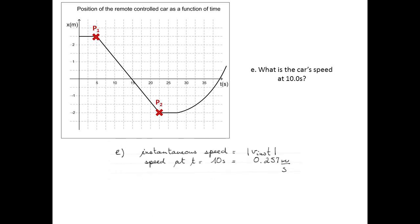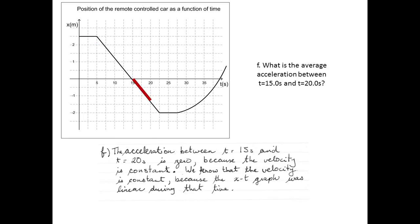The instantaneous speed is just the absolute value of the instantaneous velocity. So at 10 seconds, that is 0.257 meters per second. The acceleration between 15 and 20 seconds is 0, because the velocity is constant. The slope of the position-time graph does not change between 15 and 20 seconds — the slope is the velocity, and if the velocity doesn't change, there is no acceleration.